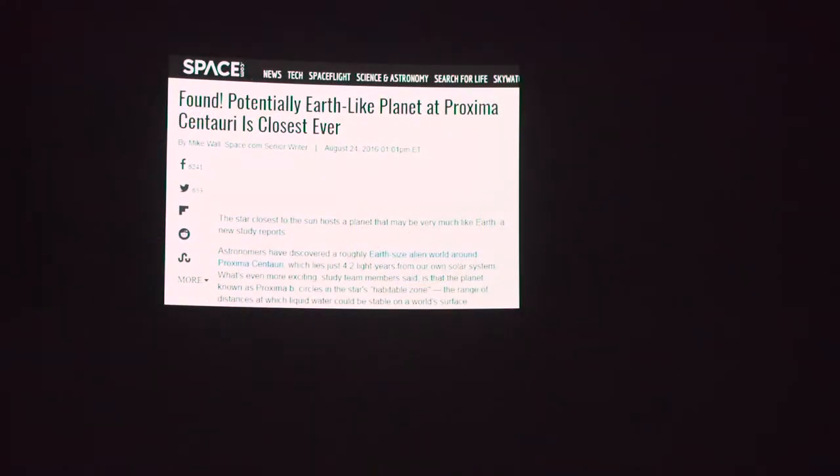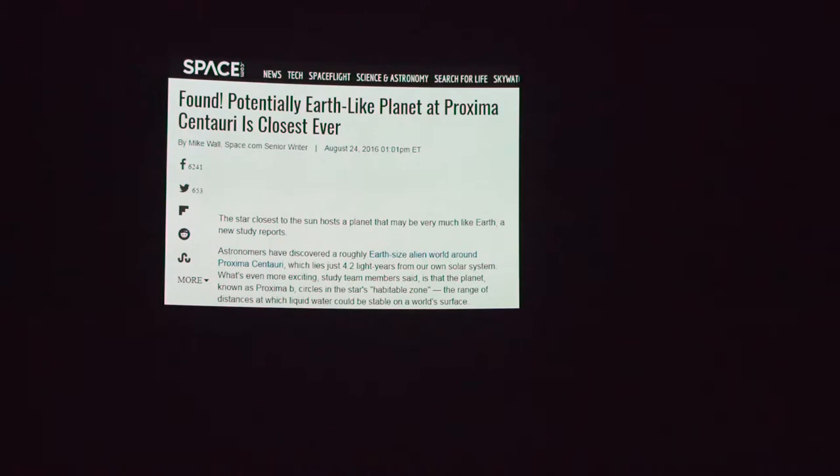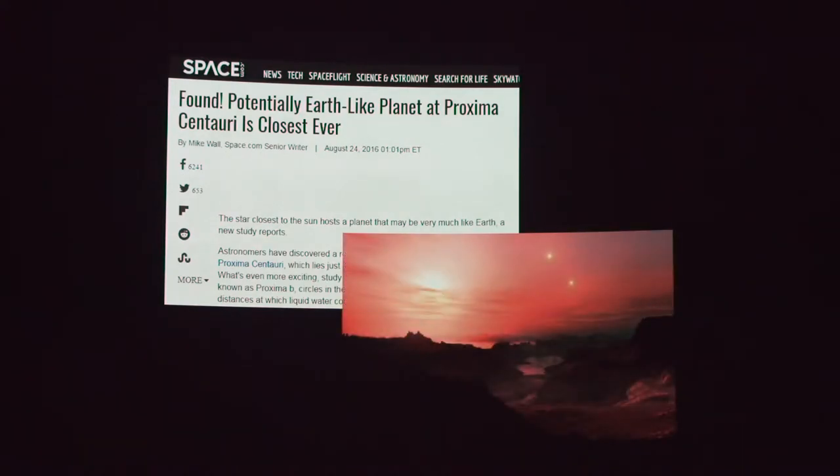So one last story, which I will go through really quickly. You might remember last year that it was announced that the closest planet outside of our solar system was found orbiting Proxima Centauri, Proxima Centauri b, which is orbiting around Alpha Centauri a and b, which is this triple star system that's over four light years away.